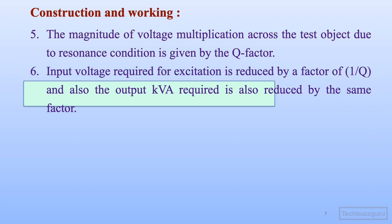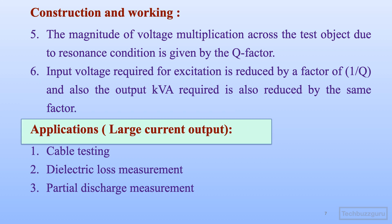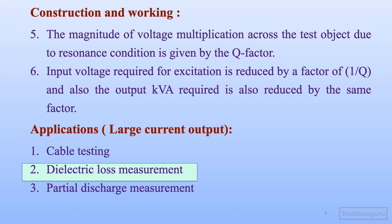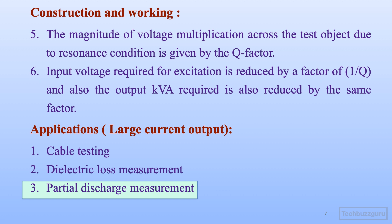Resonant transformers are used in high voltage laboratory test conditions wherever large current output requirements exist, such as in cable testing. Other applications include dielectric loss measurement of capacitors, and partial discharge measurement for cables and capacitors or across insulated dielectrics. These applications mostly require flow of large current, and unlike other methods, the resonant transformer method is well-suited for supplying larger currents because of the resonant condition.